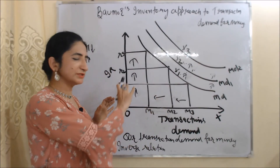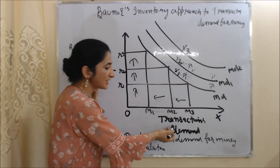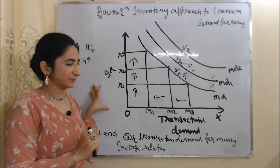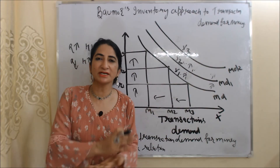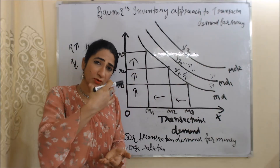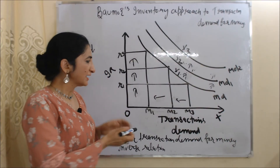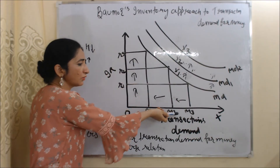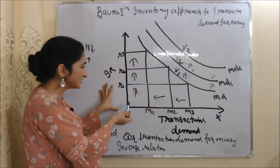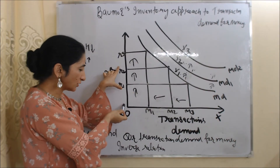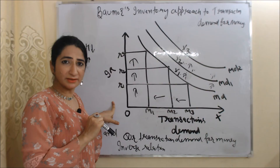Now we understand this theory with the help of a diagram. On the y-axis we have interest rate, and on the x-axis we have transaction demand — that is, how much money we hold for transaction purposes. As discussed, interest rate and money holding have an inverse relation: when interest rate is high, we hold less money for transactions; when interest rate is low, we hold more. At interest rate OR1 we hold OM3 money. As interest rate increases from OR1 to OR2, our transaction demand for money decreases.